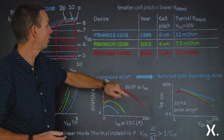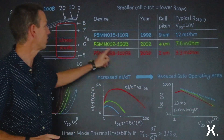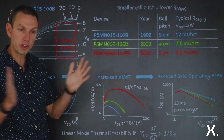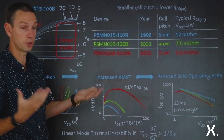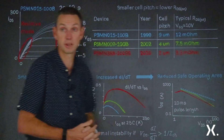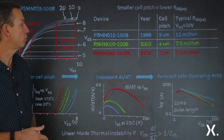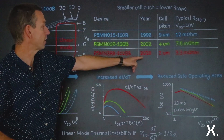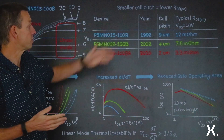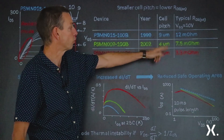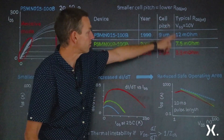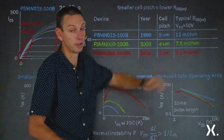We're comparing it with two 100-volt rated MOSFETs. The next generation, in 2002, the PSMN009-100B, had a cell pitch decreased from 9 to 4 microns. By shrinking the cell pitch, we got more trenches per unit area, higher current density, and a lower resistance — the typical resistance at 10 volt gate drive dropped from 12 milliohms down to 7.5 milliohms. Moving forward to 2010, the PSMN3R8-100BS was developed with a 2 micron cell pitch and even higher current density, and the resistance dropped further to typically 3.3 milliohms.